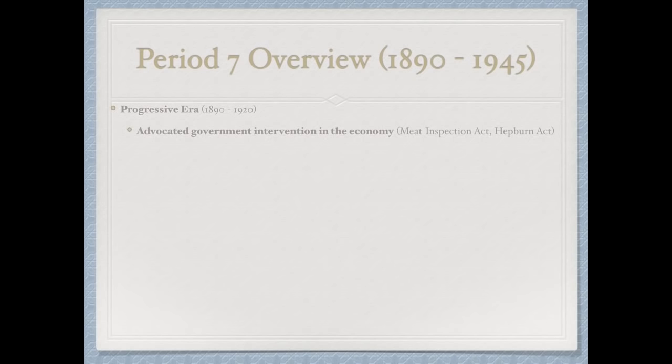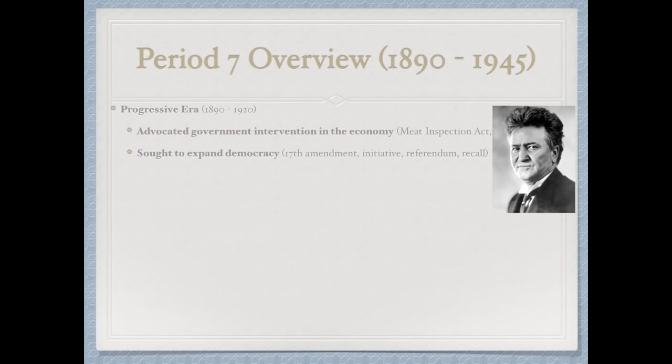The Progressive Era ran from 1890 to 1920. Progressives advocated government intervention in the economy — see the Meat Inspection Act and the Hepburn Act, which regulated railroads. They also sought to expand democracy. Robert La Follette, governor and senator from Wisconsin, initiated the Initiative, Referendum, and Recall through his Wisconsin Idea — all examples of increasing democracy. Progressives tended to be women, middle class, and city dwellers, distinguishing them from the mostly rural Populist movement.